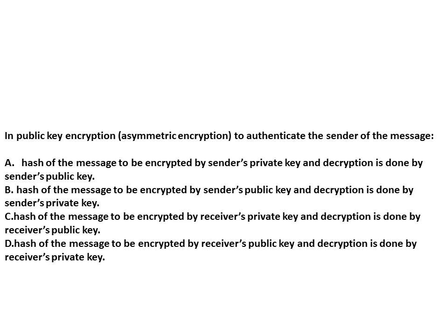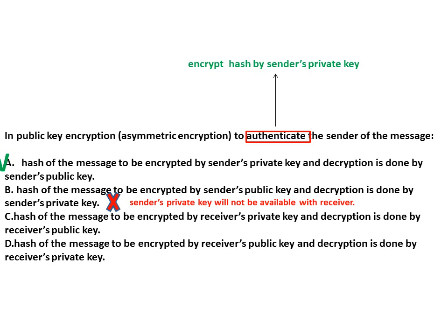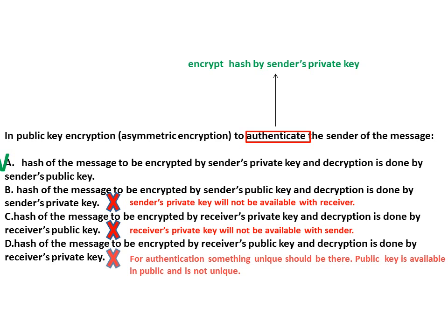In public key encryption to authenticate the sender of the message, the objective is authentication. For authentication, I need something unique, so I will use the sender's private key — that is unique and available with the sender only. The answer is A: hash of the message to be encrypted by the sender's private key. Option B is not right because the sender's private key will not be available with the receiver. Option C is about the receiver's private key, which will not be available with the sender. Option D says receiver's public key, but for authentication something unique is required, and the public key is available in the public domain and is not unique.